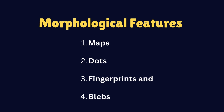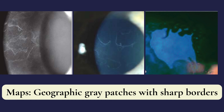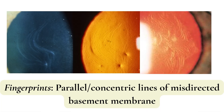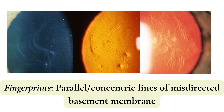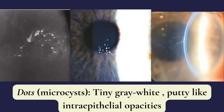MAPs are sharply demarcated grayish geographical areas with clear zones in between. Fingerprints, on the other hand, are parallel concentric lines created by the misdirected or reduplicated basement membrane. They are best appreciated on retro illumination. MAPs and fingerprints are both a result of the abnormal basement membrane.